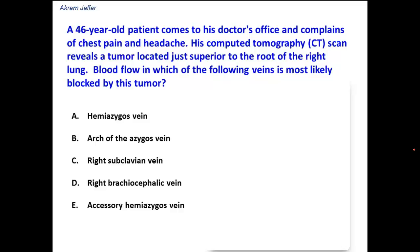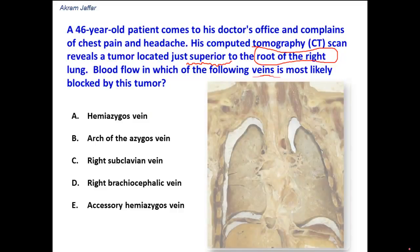A 46-year-old patient comes to his doctor's office and complains of chest pain and headache. His computed tomography scan reveals a tumor located just superior to the root of the right lung. Blood flow in which of the following veins is most likely blocked by this tumor? There is a tumor at the root of the right lung blocking blood flow from the vein related to just superior to the root of the right lung. Let's look at the options.